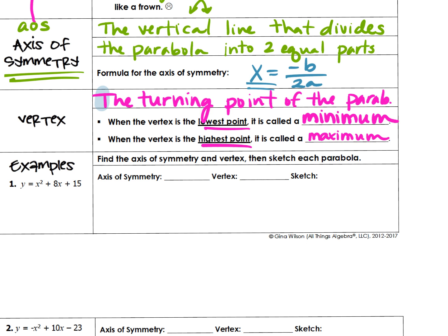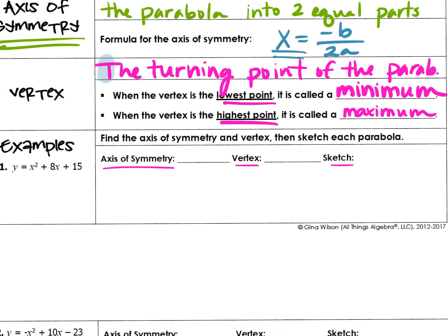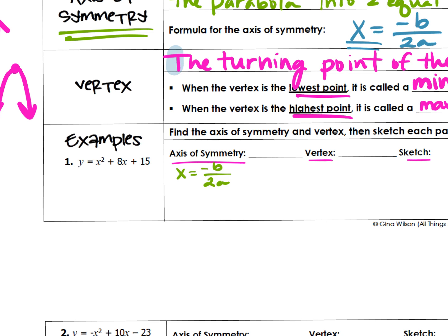That's a whole lot of information. Now what do we do with it? We're going to apply it. I'm going to give you an equation and you're going to find the axis of symmetry, find the vertex, and then sketch what a graph of it might look like. For number one, what is your A value? A is 1. You don't have to write A equals, B equals, C equals, but if you struggle at all on this, that will be very helpful for you.